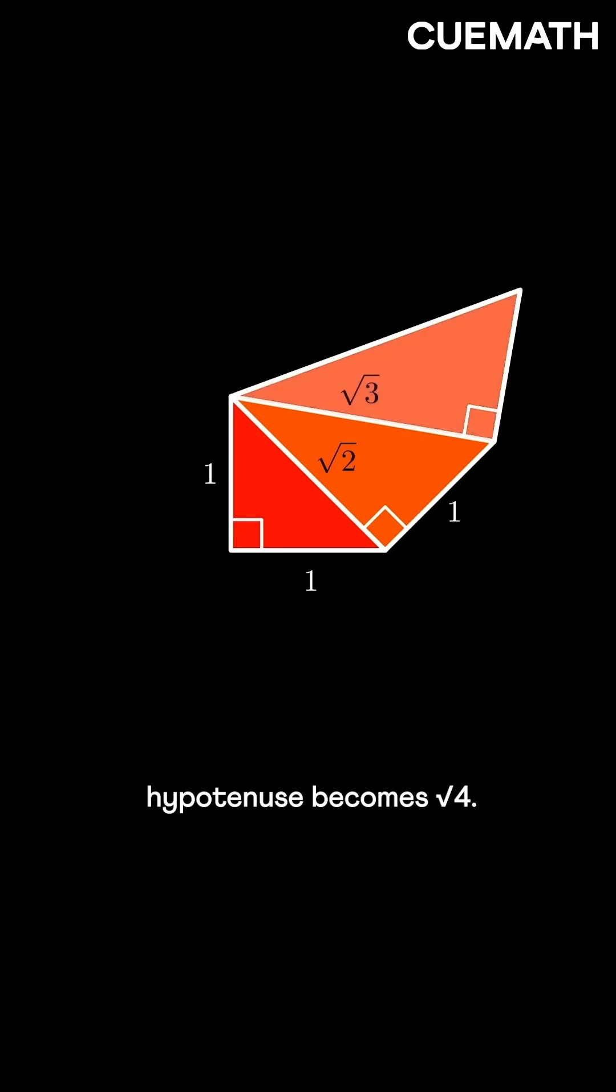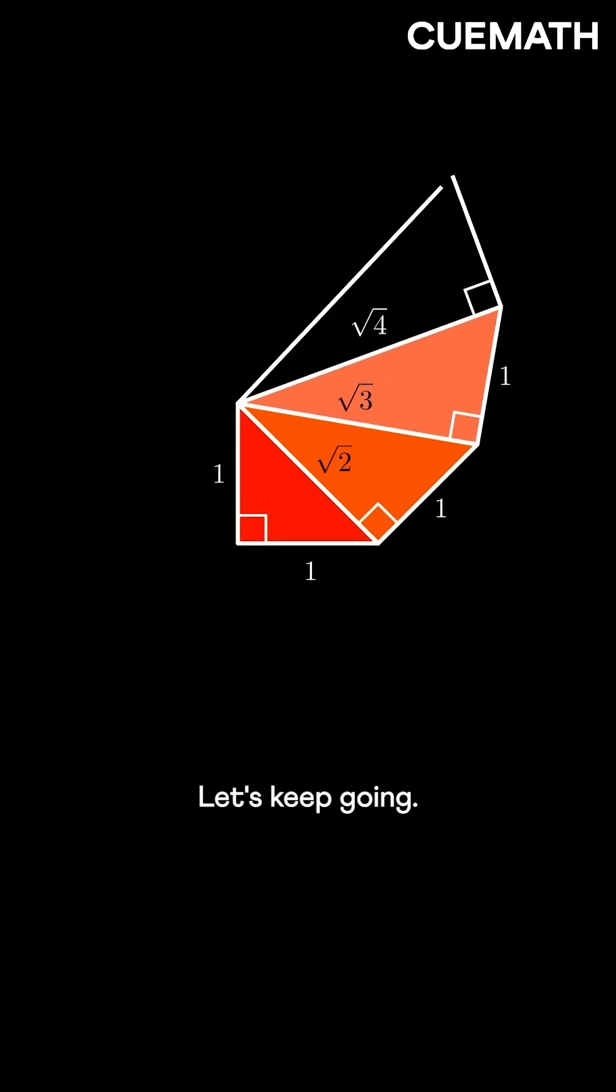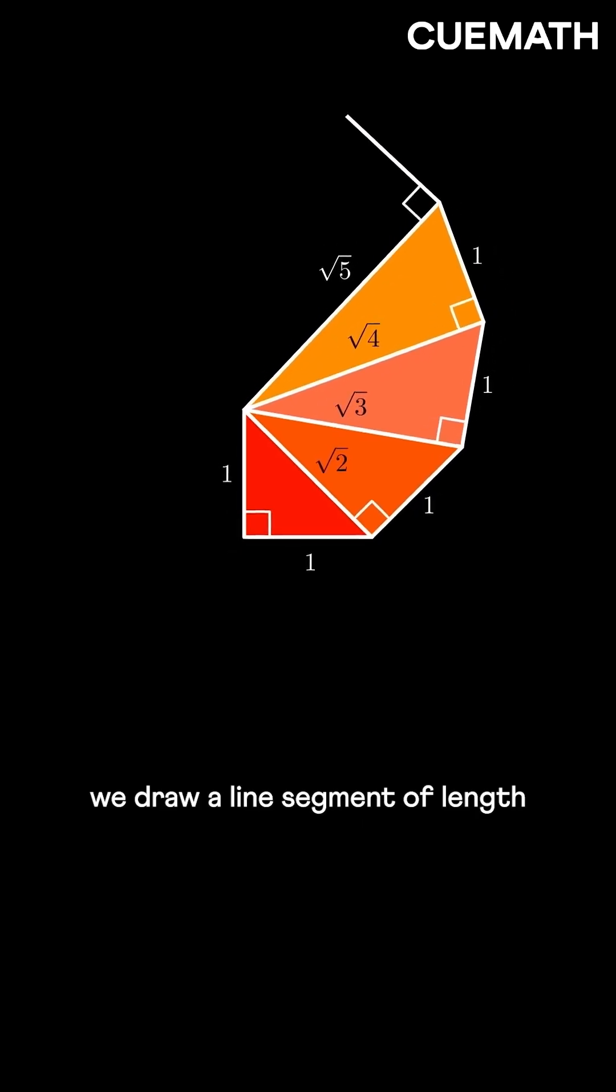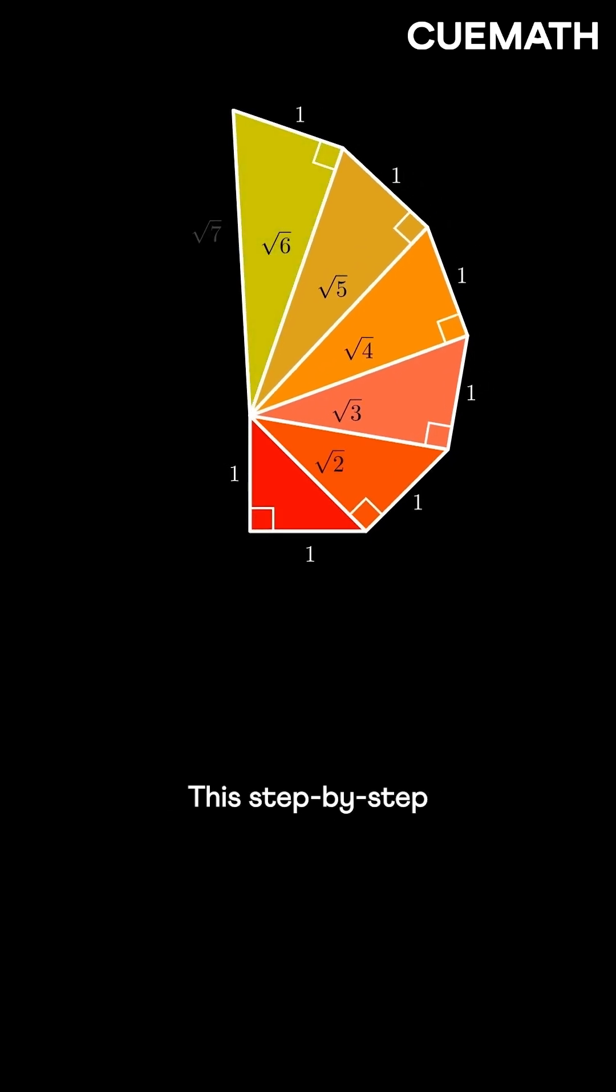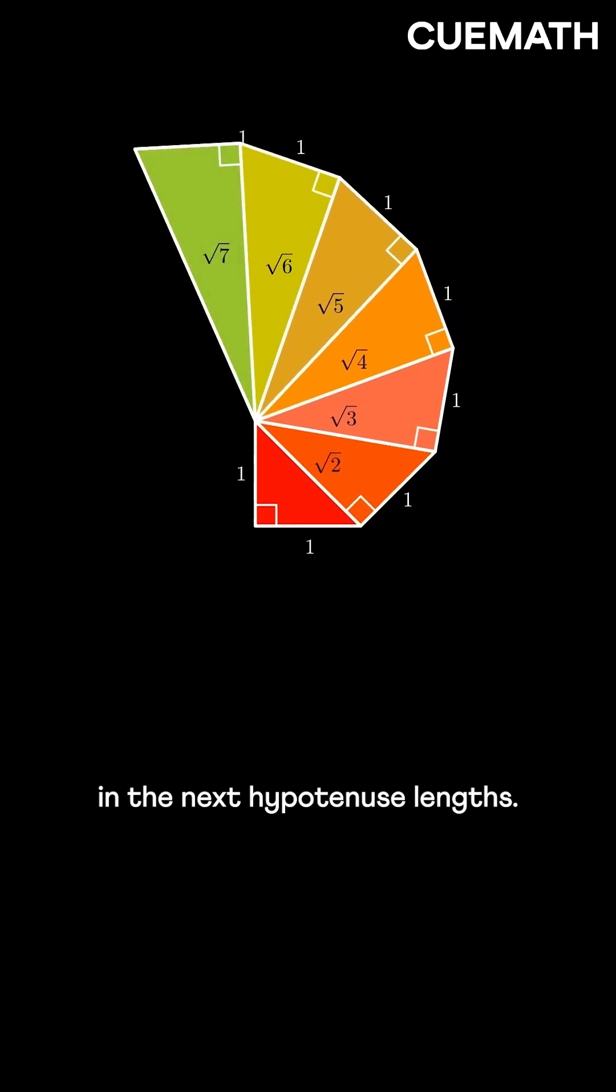Repeat this step and the next hypotenuse becomes √4. Let's keep going. Each time we draw a line segment of length 1 perpendicular to the last hypotenuse. This step-by-step construction results in the next hypotenuse lengths.